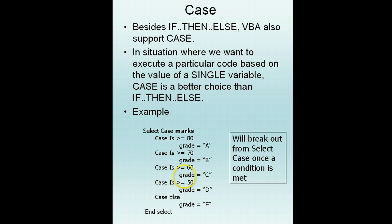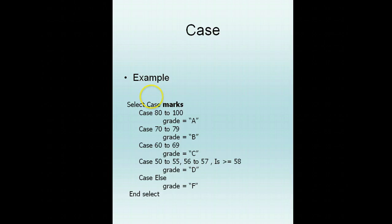And some other things that you can do in select case, for example, is you can do this as well. If it's 80 to 100, grade A. If it's 70 to 79, B. 60 to 69, C. If it's 50 to 55, or 56 to 57, or it's more than equals to 50, it's grade D. Else is grade F.